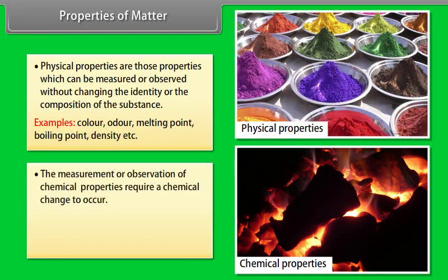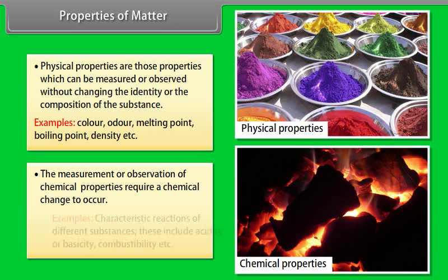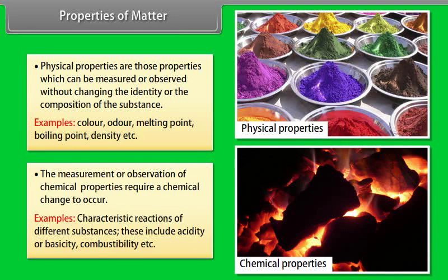The measurement or observation of chemical properties require a chemical change to occur. Examples: Characteristic reactions of different substances. These include acidity or basicity, combustibility, etc.